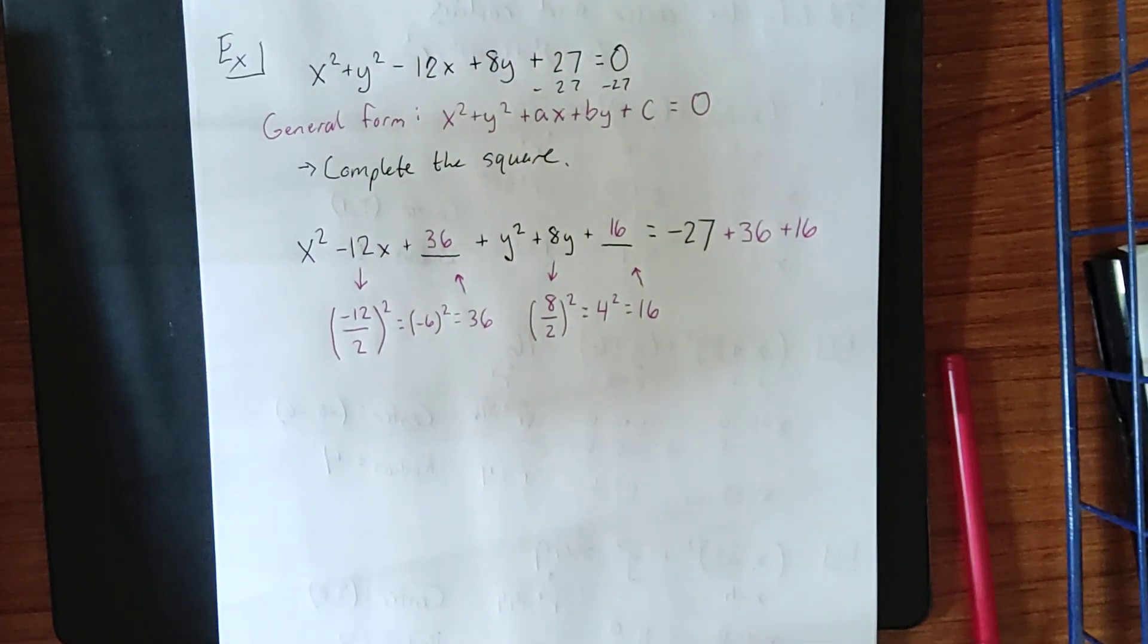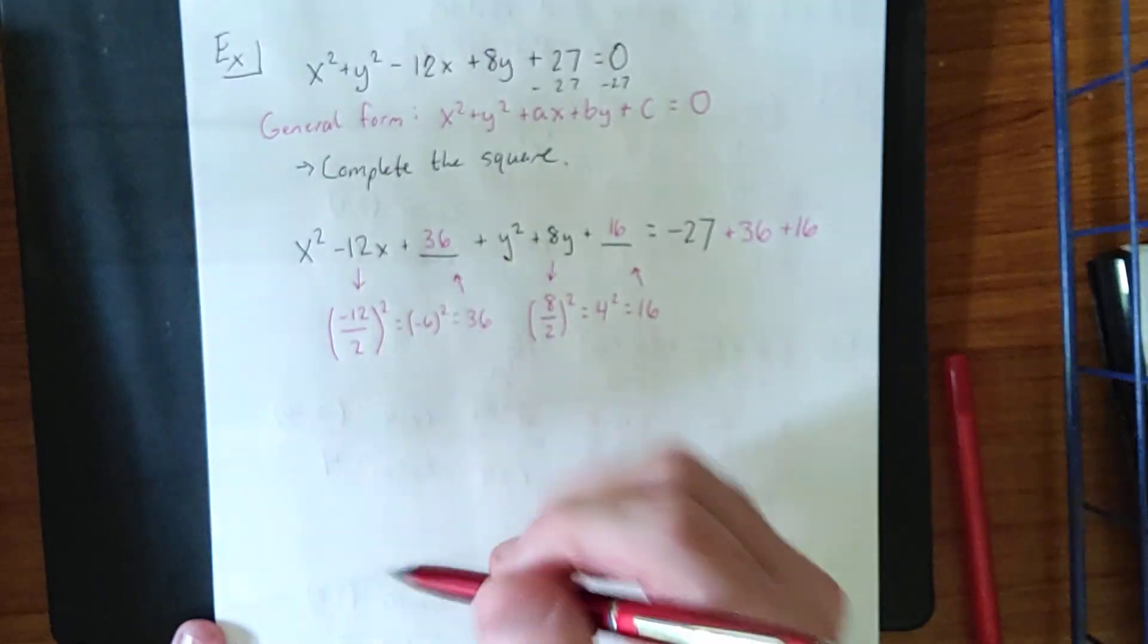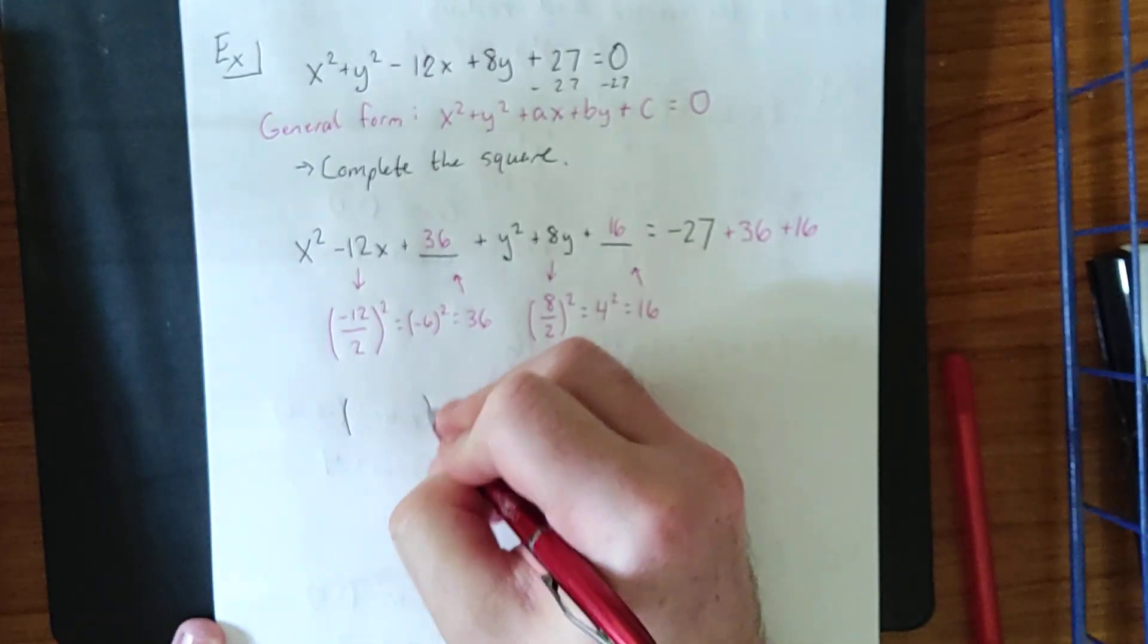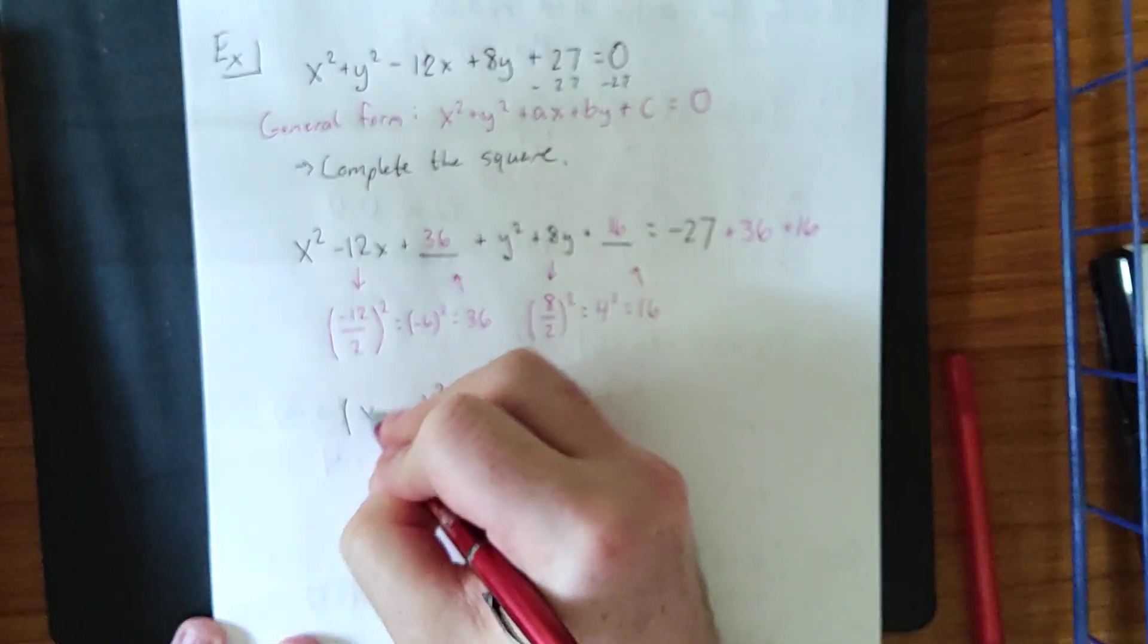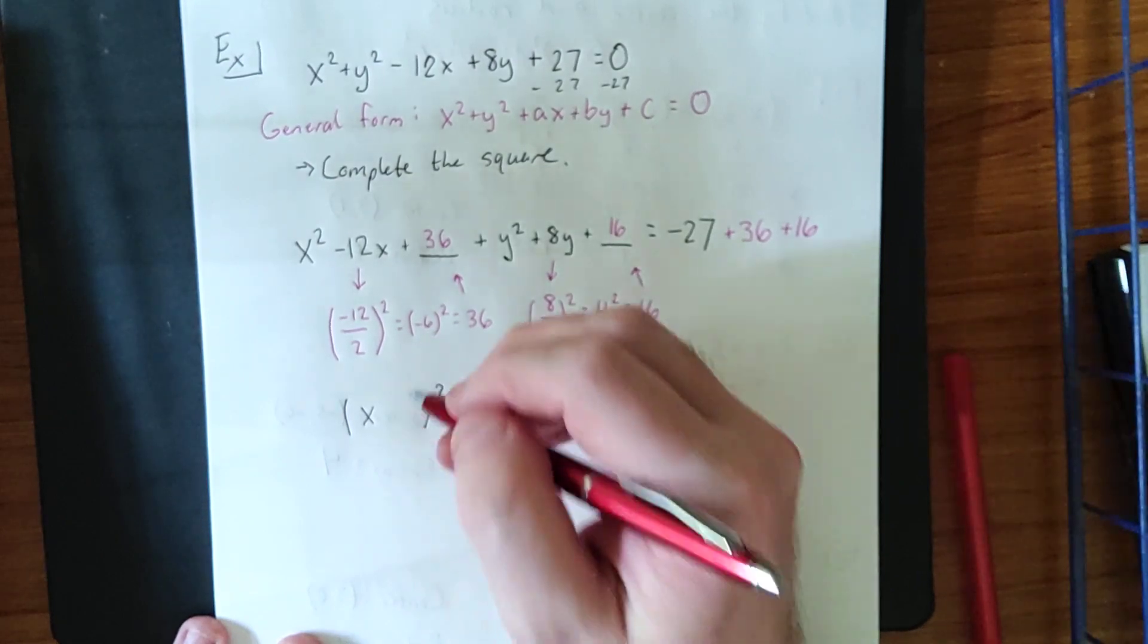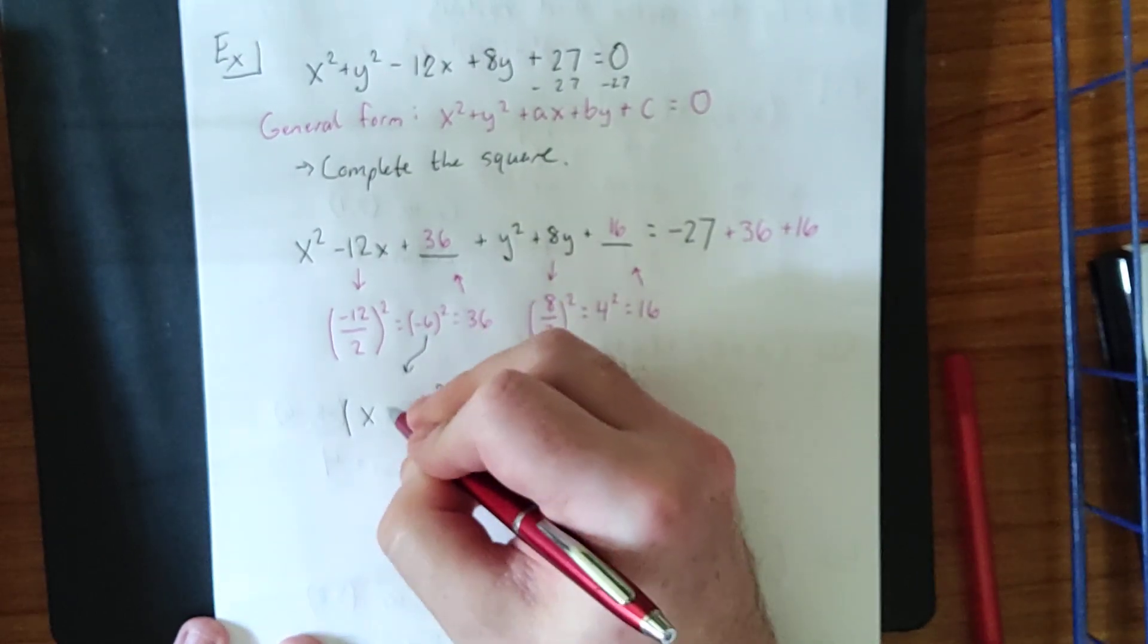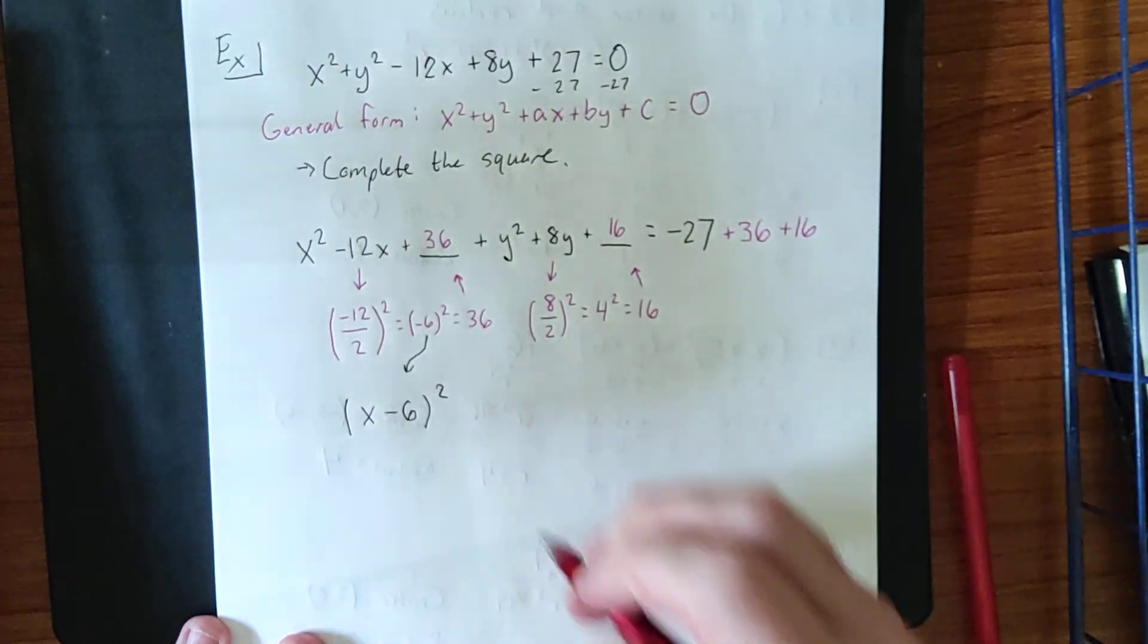Now, this lends itself very nicely to standard form of a circle. X squared minus 12x plus 36 is now a completed square, and there is a shortcut to figure out what that completed square is. The number that you get inside the parentheses, but before you square, is the number that accompanies the x inside the parentheses here. So, this will be x minus 6 quantity squared.